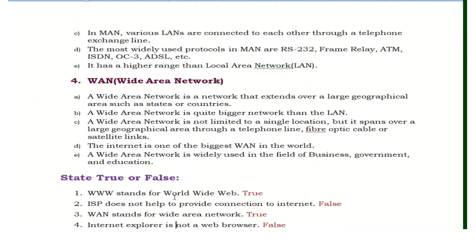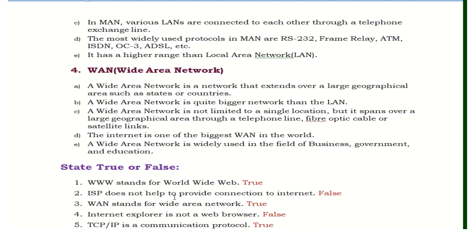The fourth type is WAN, Wide Area Network. A Wide Area Network extends over a large geographical area such as a state or country. WAN is not limited to a single location but spans large geographical areas through telephone lines, fiber optic cables, and satellite links. The Internet is one of the biggest WANs in the world. WAN is widely used in the fields of business, government, and education.